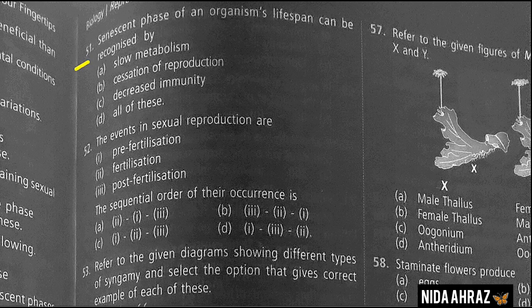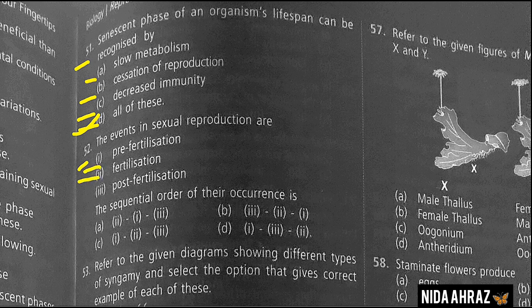The senescent phase of an organism's lifespan can be recognized by slow metabolism, cessation of reproduction, decreased immunity, or all of these. The correct choice is all of these. The events in sexual reproduction are pre-fertilization, fertilization, and post-fertilization. The correct sequential order is one, two, and three — option C.